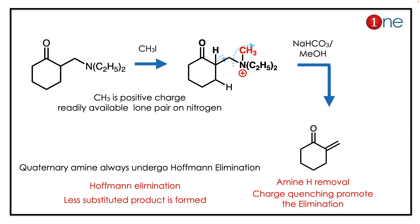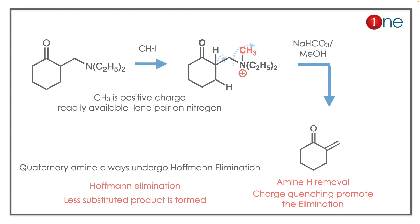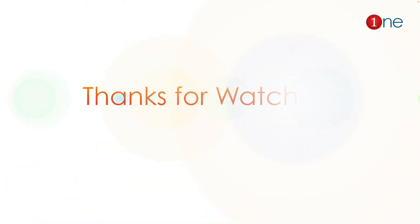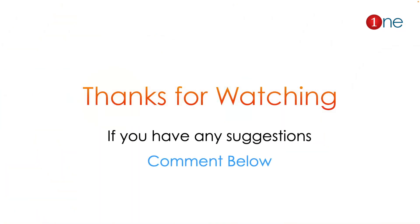The key concept to learn here is that quaternary ammonium salts always undergo Hofmann elimination, meaning the less substituted product will always form. In contrast, Zaitsev elimination gives the most substituted product. That's all from this video — thanks for watching.